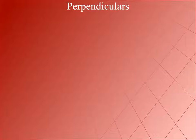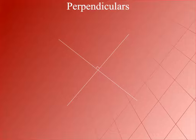Perpendiculars: Two lines, line segments, or rays are said to be perpendicular if they intersect each other at right angles. Here, the lines L and M are perpendicular because they intersect making a right angle of 90 degrees.